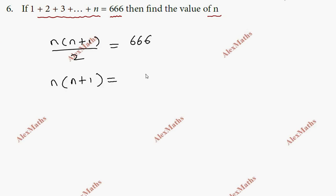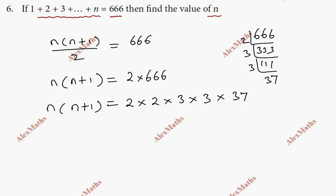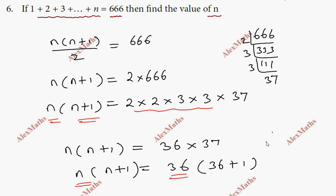Factoring 1332: 2 × 666 = 2 × 2 × 333 = 2 × 2 × 3 × 111 = 2 × 2 × 3 × 3 × 37 = 4 × 9 × 37 = 36 × 37. Since n(n+1) = 36 × 37, comparing with consecutive numbers n and n+1, we get n = 36.